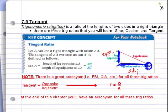Tangent deals with the ratio of the opposite leg divided by the adjacent leg. The tangent of angle A is the length of the leg opposite angle A divided by the length of the leg adjacent to angle A. We can write that as BC over AC.